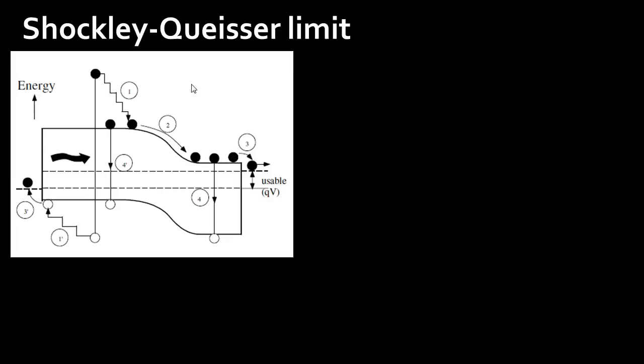I'm showing here what others at that time were doing — the approach that peers of Shockley and Queisser were taking to determine maximum efficiencies. There was a large amount of interest in this because solar cells were being considered for space applications. In fact, Russia had just launched a satellite using solar cells as a power source.